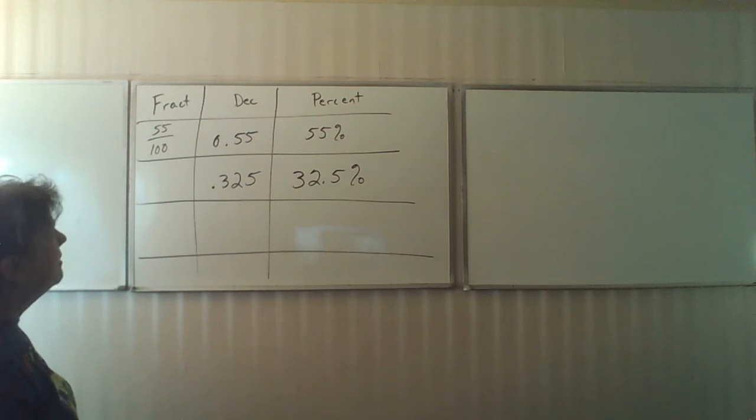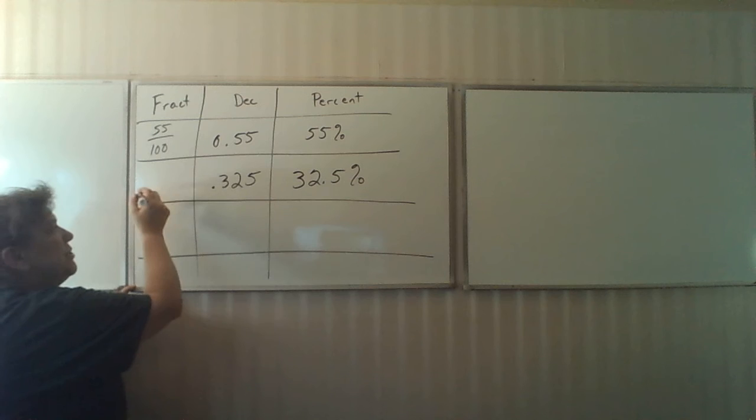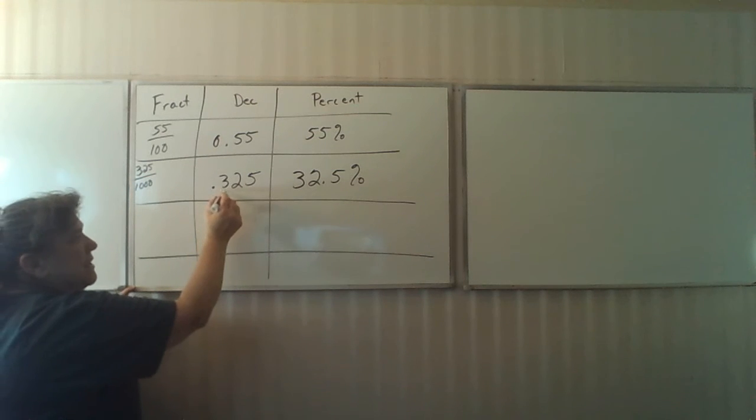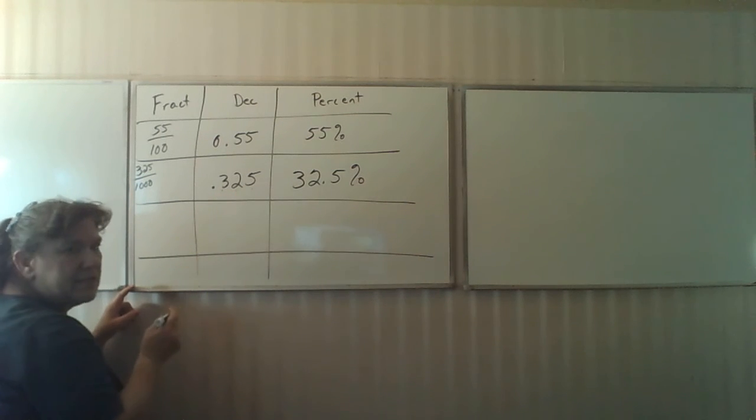Now, to change it to a fraction, I'm going to put 325 over 1,000, because this is tens, hundreds, thousands place value.